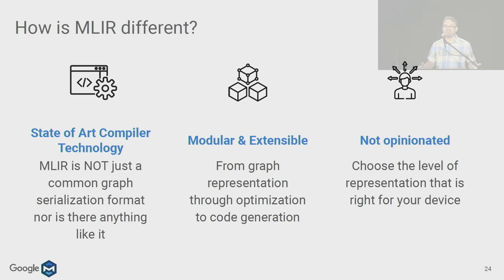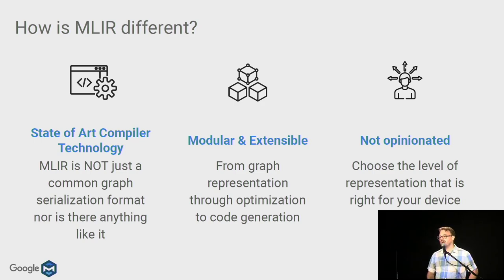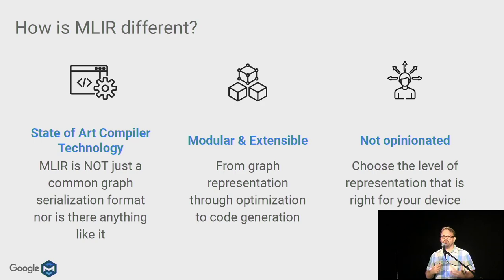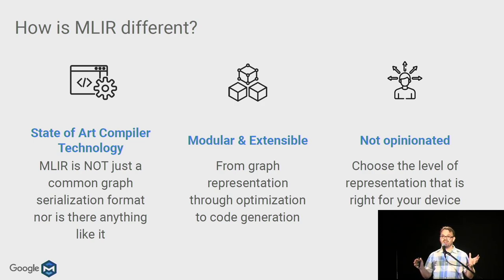These design principles lead to requirements: having everything be extensible, very few building concepts, reusability in different contexts (like SSA form), different regions and blocks to model operator behavior, pervasive source locations for traceability, and supporting high-level abstractions with progressive lowering for composability. MLIR is state-of-the-art compiler technology — not just a common graph serialization format. It's modular and extensible from graph representations to functional representations, through optimizations and flow analysis to code generation. It enables you to choose the right level of representation for your device.